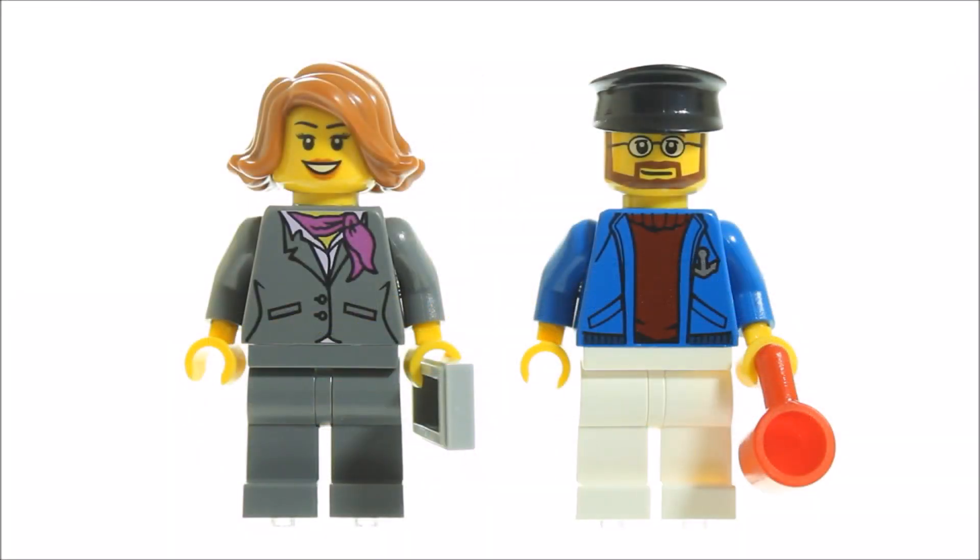The business woman has a dark grey suit with printing on the torso's front. The ferry captain has white legs with a blue sailor jacket printed torso and a shiny anchor badge, which looks good. The captain has a single-faced brown bearded glasses head with a black captain hat. The business woman has a single-faced happy female head with the curled-end orange ginger hair piece, which we have seen on the Marvel's Black Widow minifigure.